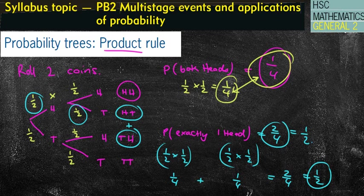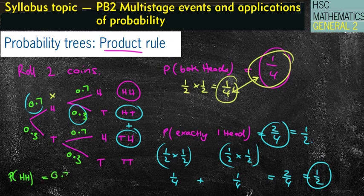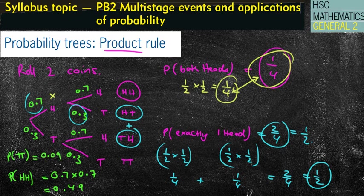You might have a biased coin where instead of an even chance, the probability of getting a head is 0.7, which means a tail will be 0.3. That means I can no longer just count outcomes, because I have different probabilities for heads and tails. If I'm looking for the probability of two heads, I'd do 0.7 times 0.7, which is 0.49. If I also wanted both tails, that's 0.3 times 0.3, which is 0.09. Then I'd add those two together. This is why we need probability trees.